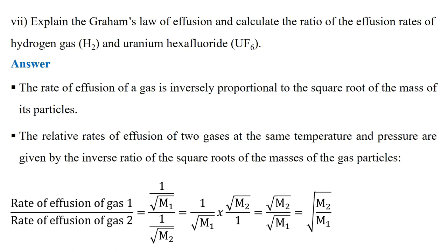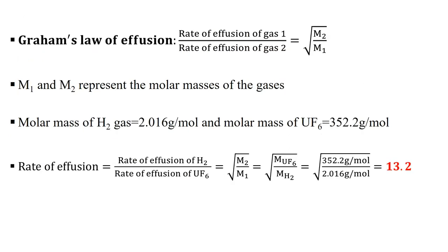The rate of effusion of gas 1 over the rate of effusion of gas 2 equals (1/√M1) / (1/√M2), which simplifies to √(M2/M1). Here M represents the molar mass. The molar mass of hydrogen gas is 2.016 g/mol, and the molar mass of uranium hexafluoride (UF6) is 352.2 g/mol.